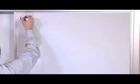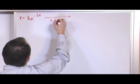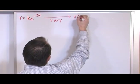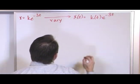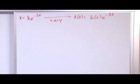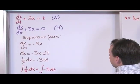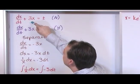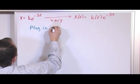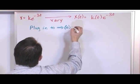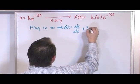So x currently is k·e to the minus 3t. We're going to let it vary: k is now a function of time, k(t), times e to the minus 3t. Now we're to the point where we can make some real progress. We're going to take this and plug it into the non-homogeneous version of our equation — dx/dt plus 3x equals t — in order to solve for k(t). To do that, we need to take the derivative of x first.